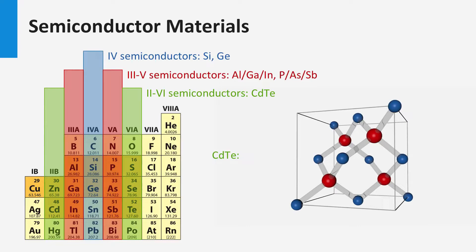Another group of semiconductor materials are the so-called II-VI semiconductor materials, like cadmium telluride. II-VI semiconductors consist of two elements: one element has two valence electrons, and the other has six valence electrons. These materials can form a diamond cubic crystalline lattice as well. In this crystalline lattice, cadmium atoms are the blue atoms and the tellurium atoms are the red atoms. Every cadmium atom is bonded to four tellurium atoms, and every tellurium atom neighbors a cadmium atom.